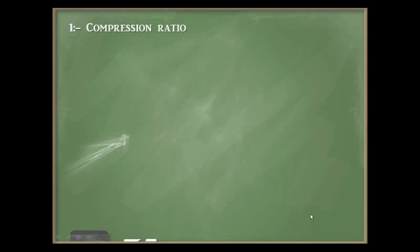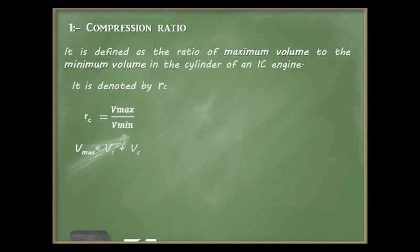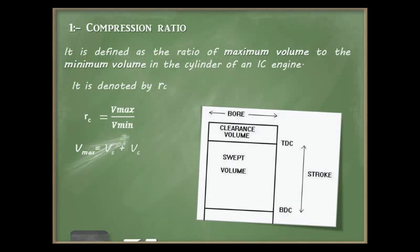The first one is compression ratio. It is defined as the ratio of the maximum volume to the minimum volume in the cylinder of an internal combustion engine, denoted by RC, which equals maximum volume divided by minimum volume. Here Vs is known as swept volume — the volume between the top dead center and the bottom dead center. As the piston moves from one dead center to another, it sweeps this volume.